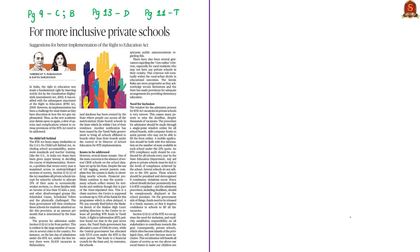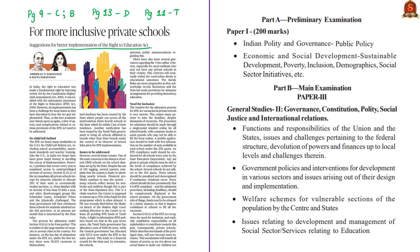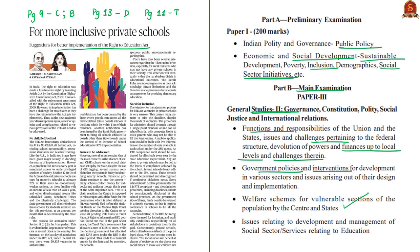This article is an open editorial with respect to better implementation of the Right to Education Act. This article will be relevant in prelim syllabus under public policy in Indian polity and in social and sustainable development, inclusion, and social sector initiatives. The discussion can also be linked to mains syllabus in GS paper 2 in functions and responsibilities of the union and states, issues pertaining to federal structure, government policies and interventions for development, welfare schemes for vulnerable sections, and social sector services relating to education.